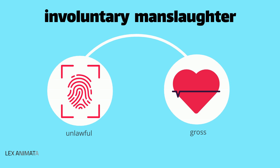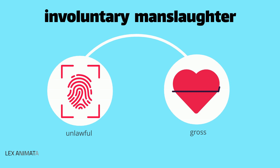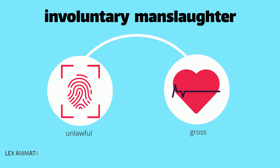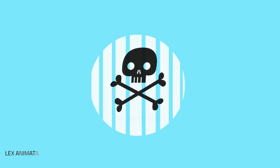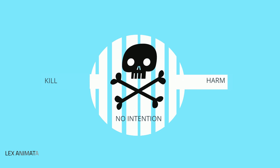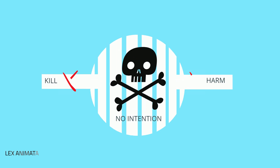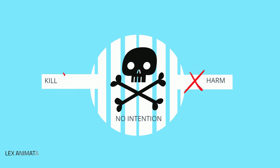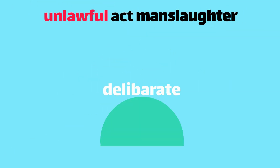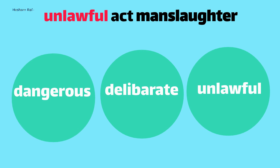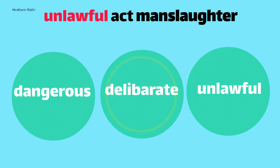Involuntary manslaughter, encompassing unlawful act manslaughter and gross negligence manslaughter, arises when death occurs without the intent to kill or cause grievous harm. In unlawful act manslaughter, the death results from a deliberate, unlawful, and dangerous act, even if it's a minor offense.